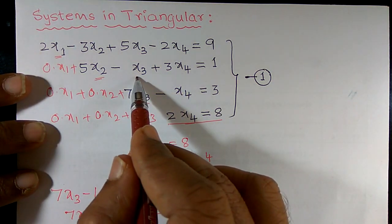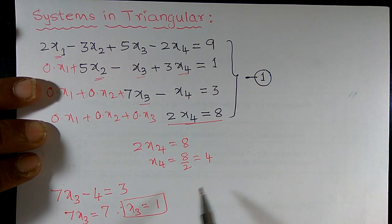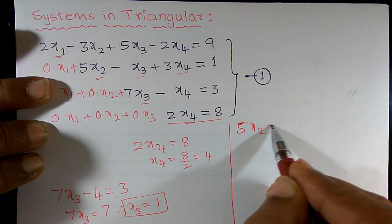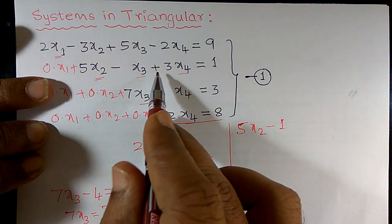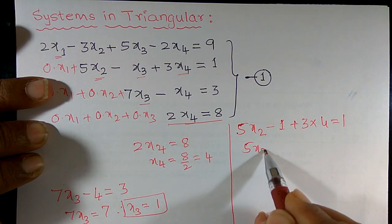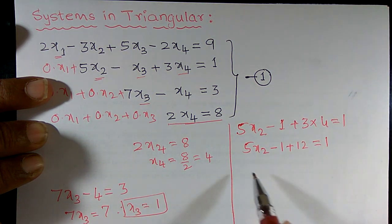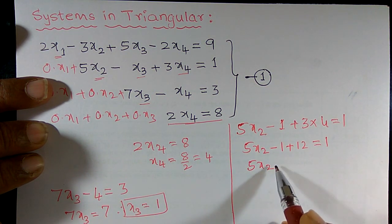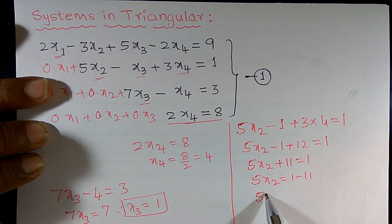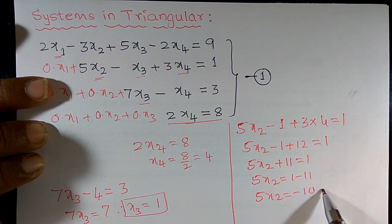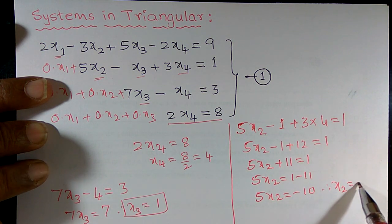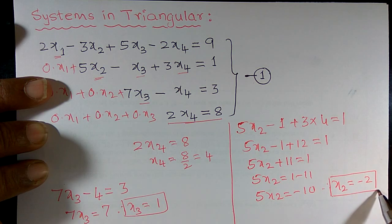Now I want to substitute the values of x3 and x4 in the previous equation. It is given that 5 times x2 minus x3 — x3 is 1 — plus 3 times x4 — x4 is 4 — equals 1. So 5x2 minus 1 plus 12 equals 1, meaning 5x2 plus 11 equals 1. Therefore 5x2 equals 1 minus 11, so 5x2 equals minus 10, giving x2 equals minus 2.